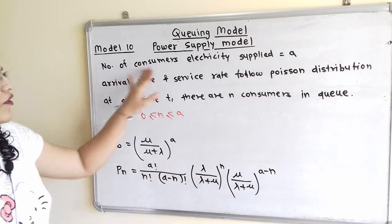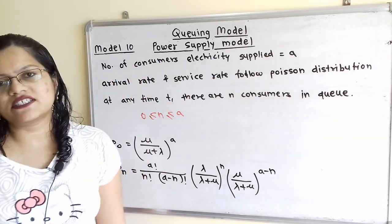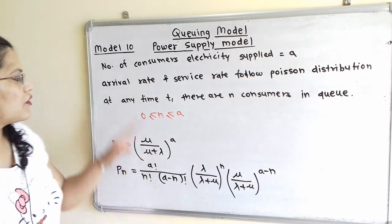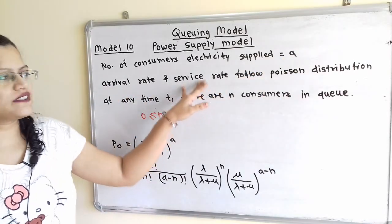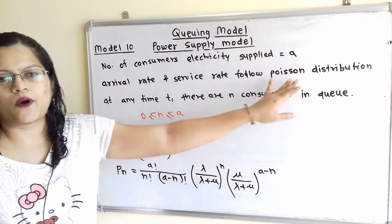Consider the number of consumers to which electricity is supplied, equal to a. The arrival rate and service rate for this model follow Poisson distribution.